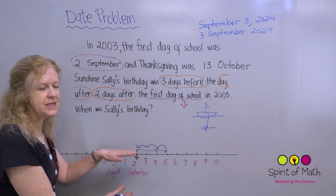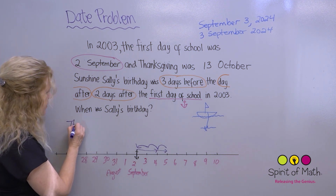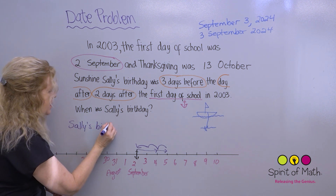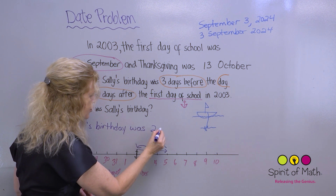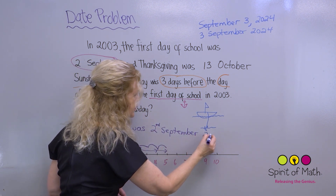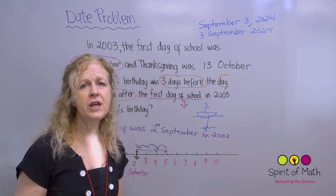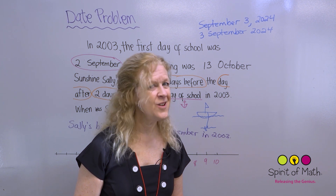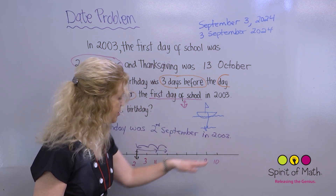So you would write a sentence answer: Sally's birthday was the 2nd of September, or September 2nd, in 2003. Now, would her birthday be September the 2nd in any year? Yes. But would it be the first day of school in any year? No — it's always going to be September the 2nd, but that doesn't mean it's always going to be the first day of school, which it was in 2003.